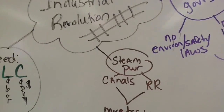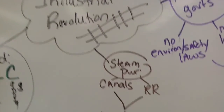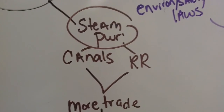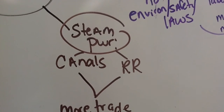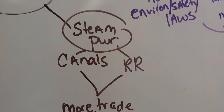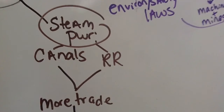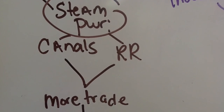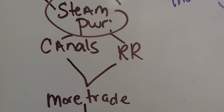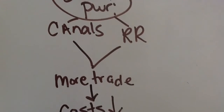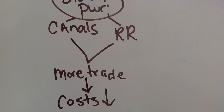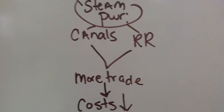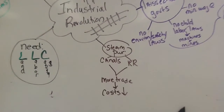Steam power was a big component of the Industrial Revolution. Two ways it changed transportation were the growth of canals, especially with steamships, and the expansion of railroads. This allowed goods to reach more places in less time, increasing trade, which decreased the costs of many products and made more products available to more people.